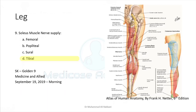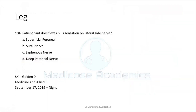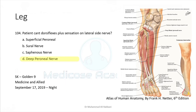A patient can dorsiflex the foot — dorsiflexion is a function of the anterior compartment, supplied by the deep peroneal nerve — so the answer is deep peroneal nerve. The deep peroneal nerve also supplies sensation in the web space between the big toe and the second toe. The lateral side of the foot is supplied by the sural nerve, a branch of the common peroneal. This particular question has some inaccuracy regarding the sensory component.